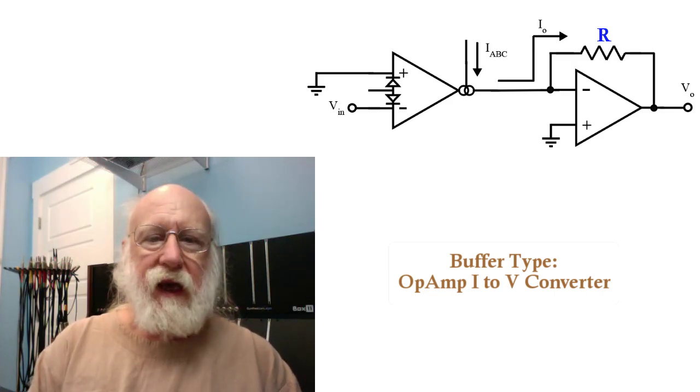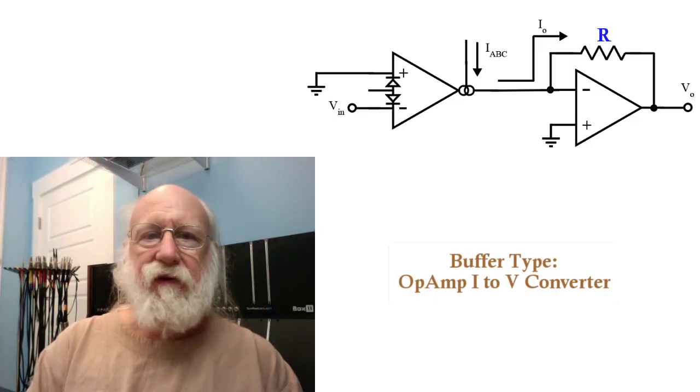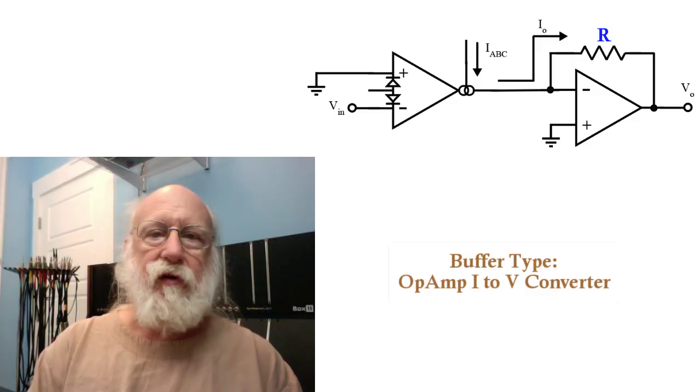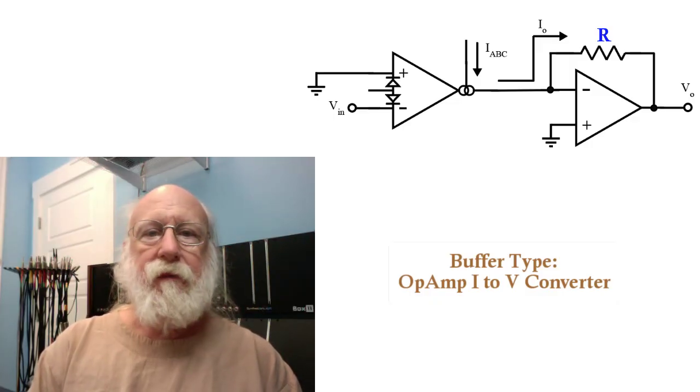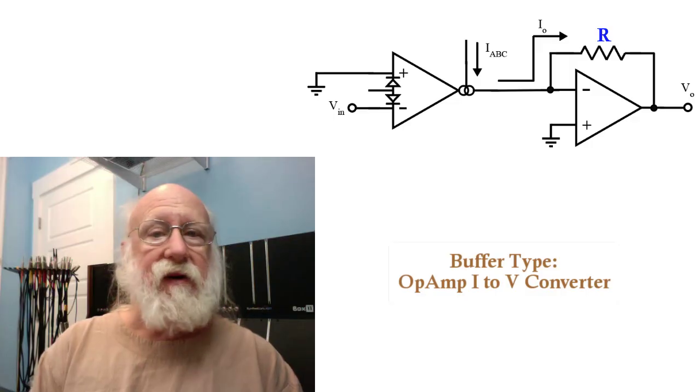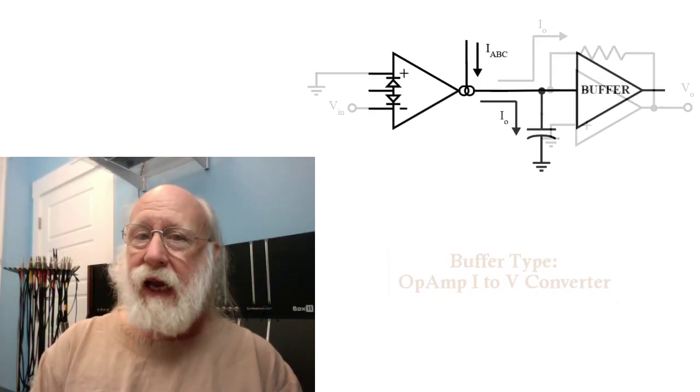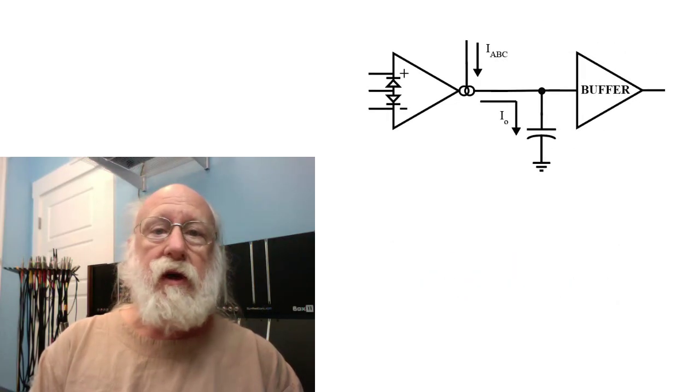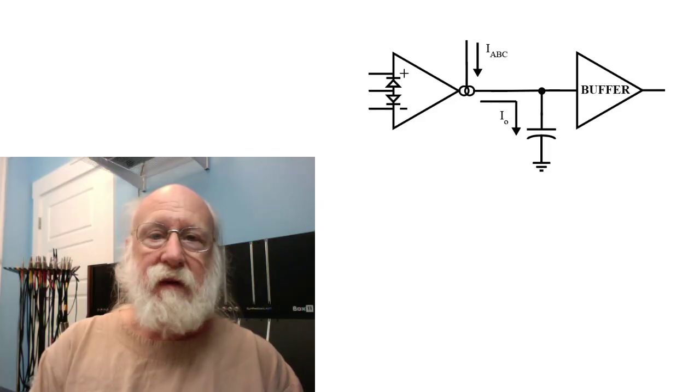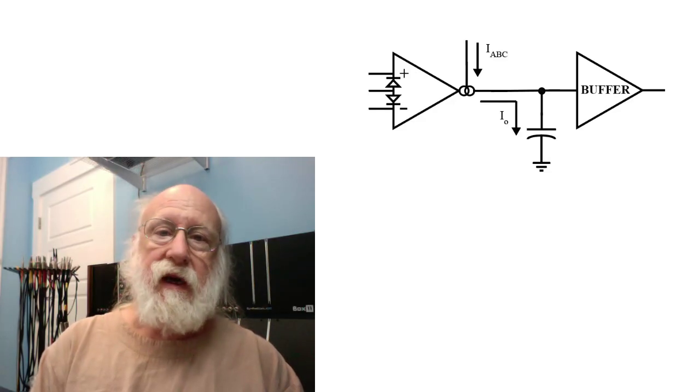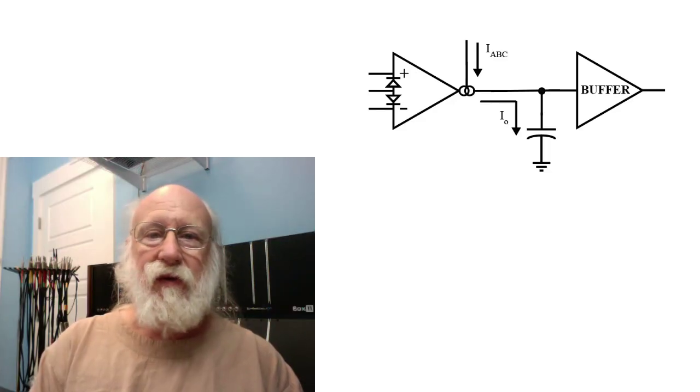In other applications, for example, if you're building a voltage controlled filter where the output current is actually being used to charge a capacitor, then you can use the same buffering schemes to buffer the voltage on that capacitor that you did for buffering the voltage on the current to voltage conversion resistor.